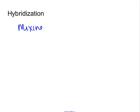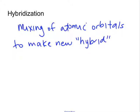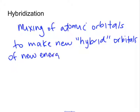Today we're talking about hybridization. The definition of hybridization is the mixing of atomic orbitals to make new hybrid orbitals of new energy and shape suitable for chemical bonding.